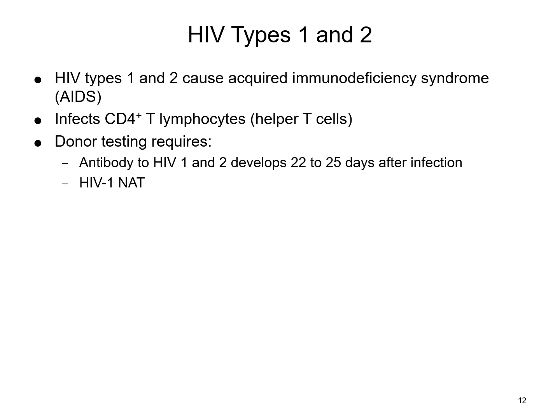HIV type 1 and 2 causes acquired immunodeficiency syndrome, or AIDS, and infects the CD4 positive T lymphocytes, or helper T cells. Donor testing requires looking for antibody to HIV 1 and 2, which can develop 22 to 25 days after infection, and NAT testing for HIV 1 is also required.